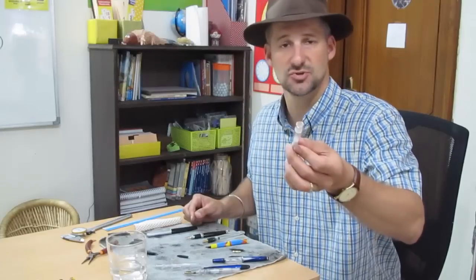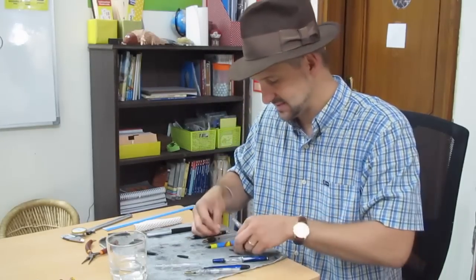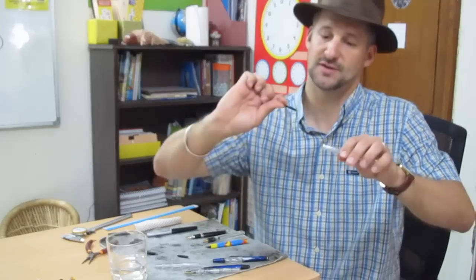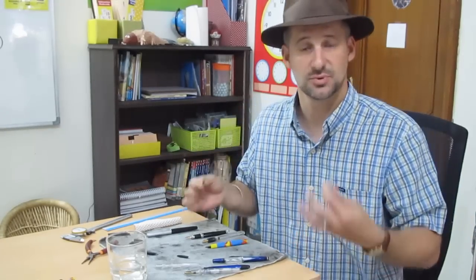Now in other pens, for instance, the FPR Induce, the section is completely round. It means it doesn't really matter if I put the feed in at this angle or if I twist it and I put it in at this angle. It doesn't really matter.